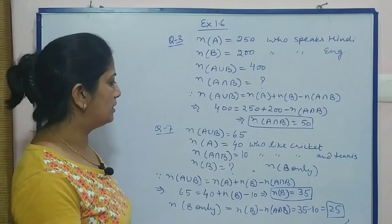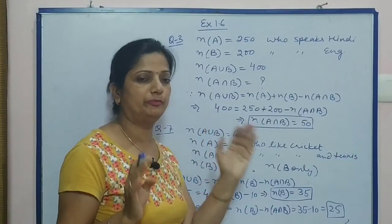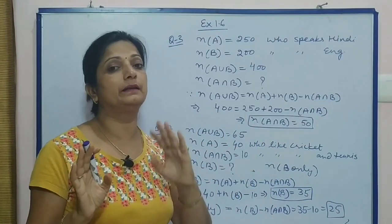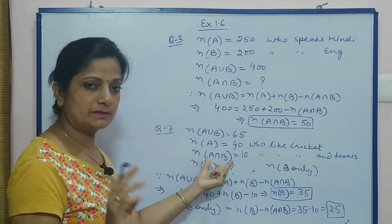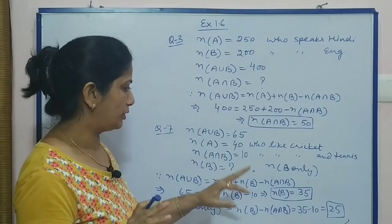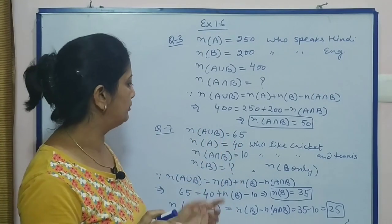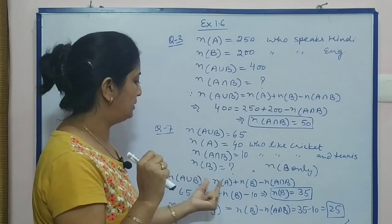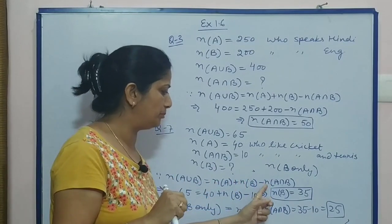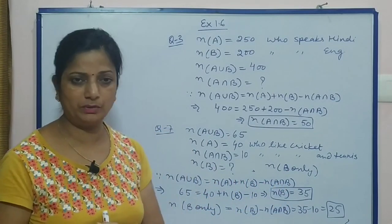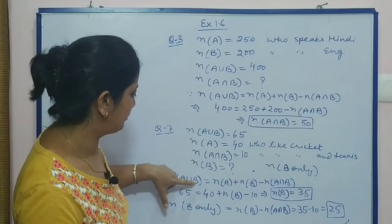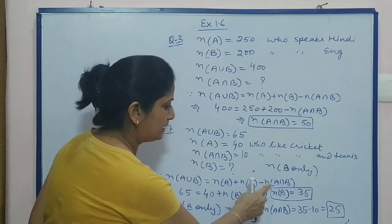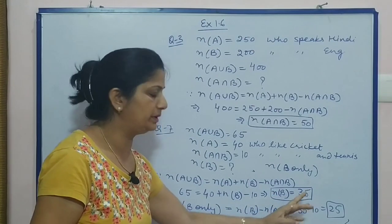Question 7: In a group of 65 people, 40 like cricket and 10 like both — so 10 is the intersection, A is 40, and union is 65. First we calculate number of B. Using n(A∪B) = n(A) + n(B) - n(A∩B), substituting: n(A∪B) is 65, n(A) is 40, n(A∩B) is 10. So number of B is 35.